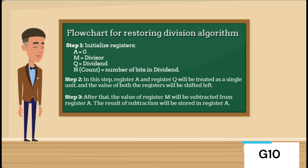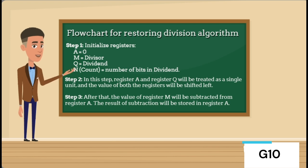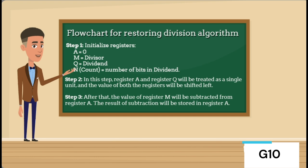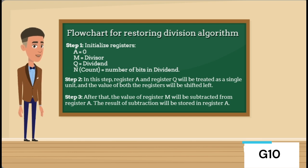Step 1: Initialize registers — register A equals 0, M is the divisor, Q is the dividend, and N is the number of bits in the dividend. Step 2: Register A and register Q are treated as a single unit and both are shifted left. Step 3: The value of register M is subtracted from register A, and the result of the subtraction is stored in register A.